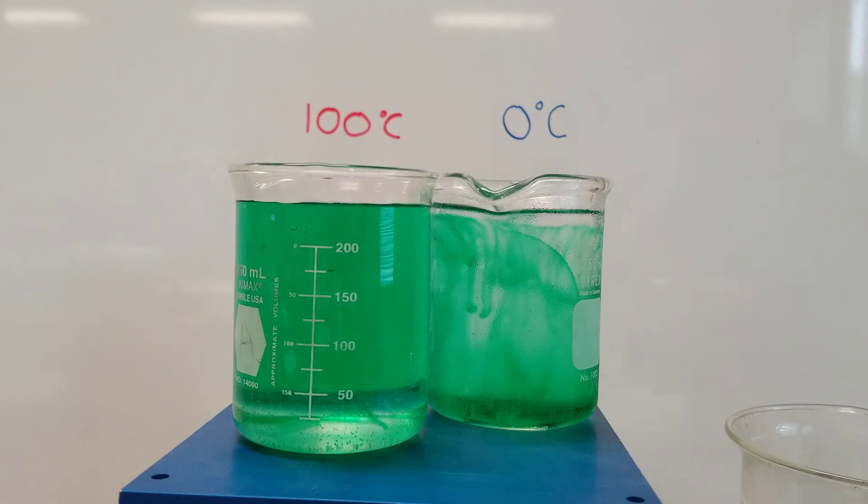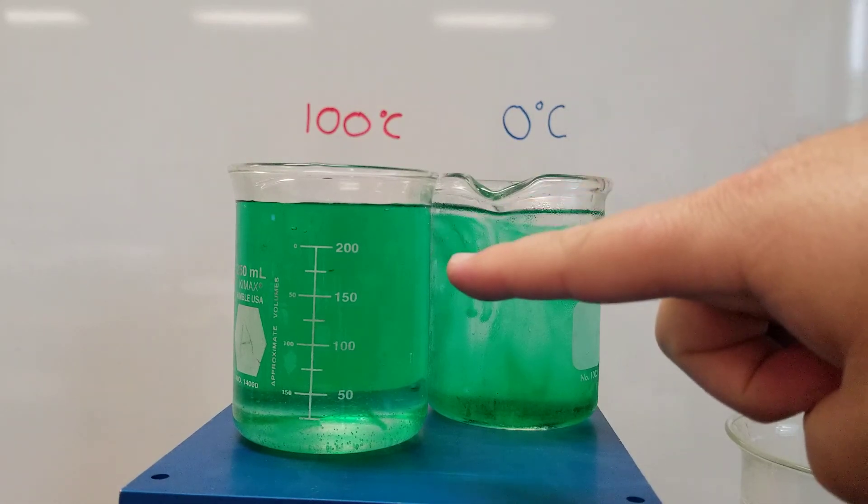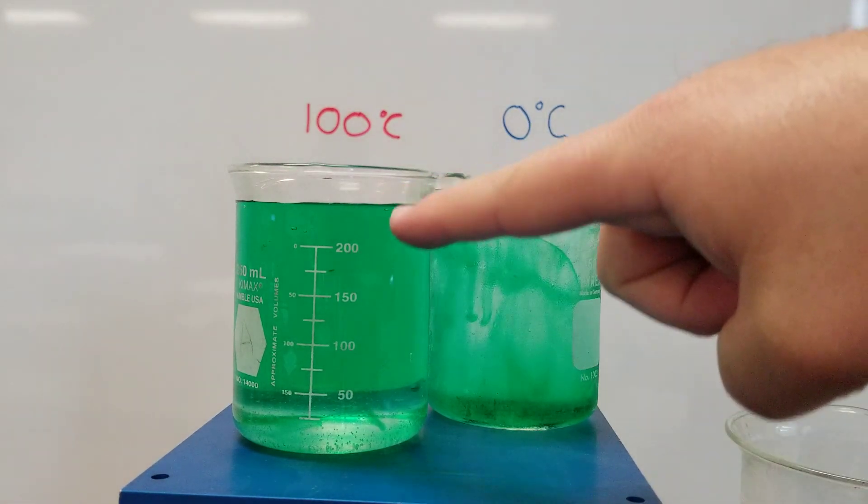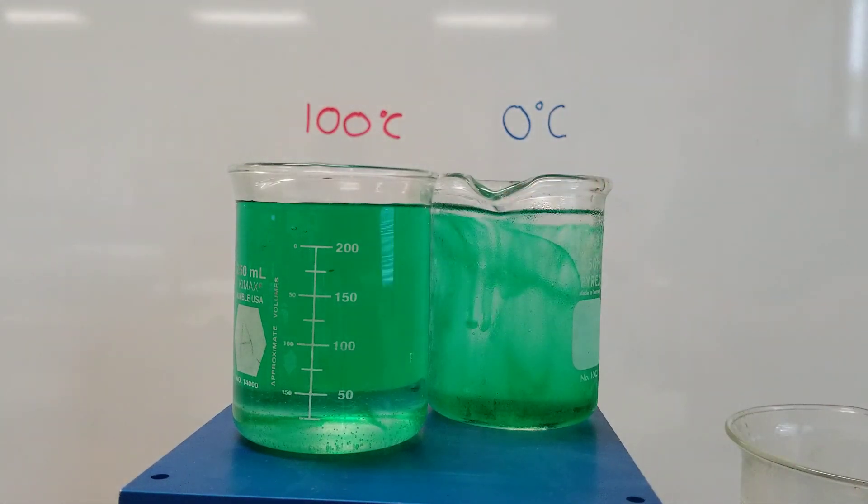Your goal at the end of doing that is to come back and explain why this one, the food coloring spread out quickly, and this one does not. It did not.